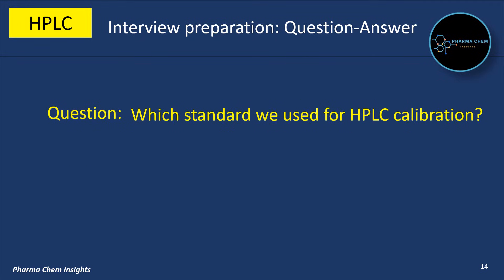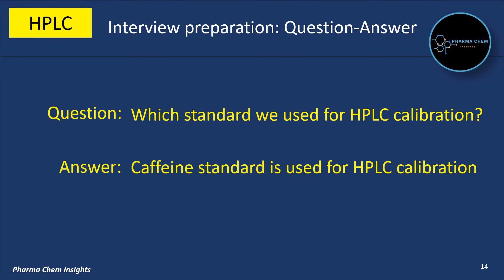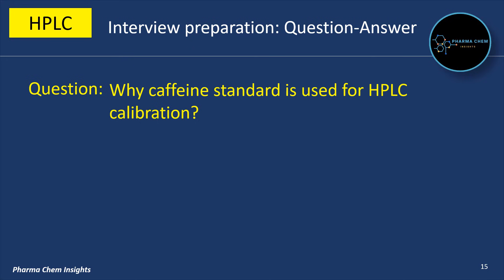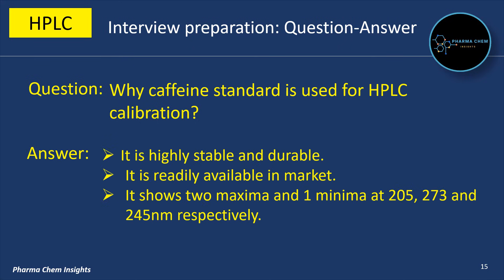Which standard is used for HPLC calibration? Caffeine standard is used for HPLC calibration. It is highly stable and durable, and readily available in the market. It shows two maxima and one minima at 205, 273, and 245 nanometers respectively.